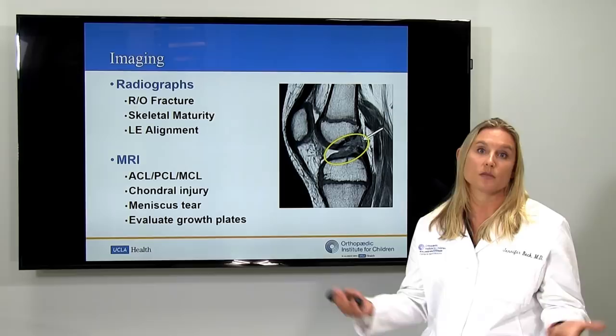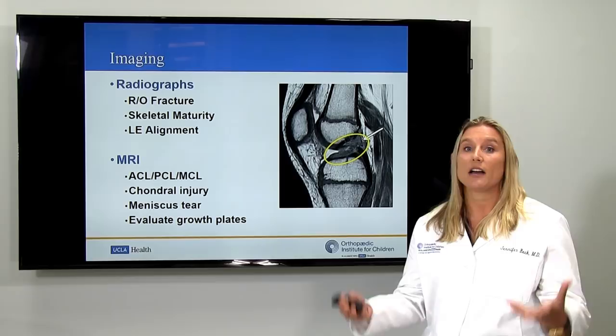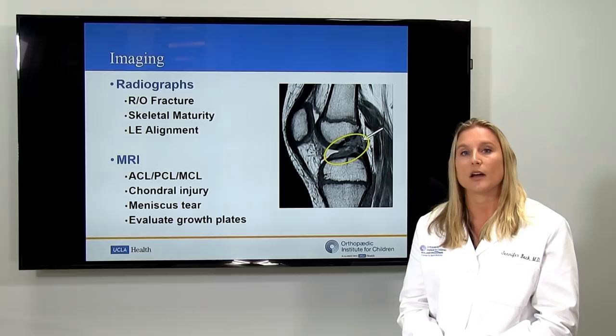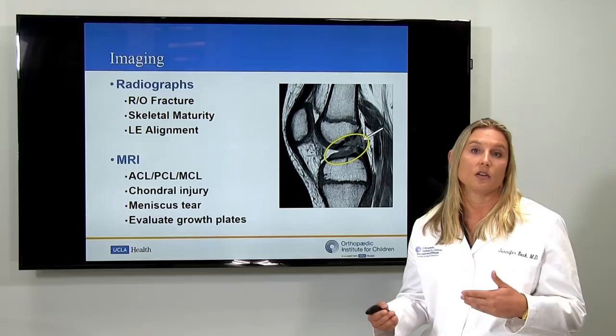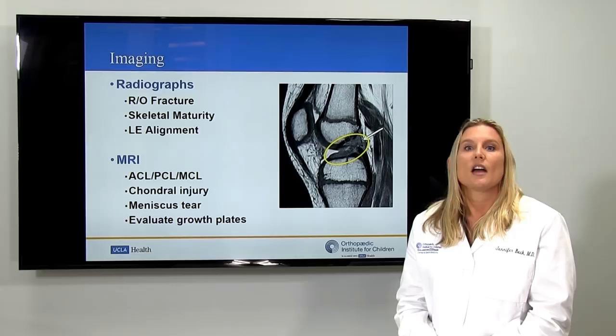If you go into an urgent care or clinic, we'll start with X-rays to check for broken bones, which can also cause a swollen knee. We want to see if your child is done growing — do they still have growth plates? We also look at alignment, how the hips, knees, and ankles line up. X-rays are good at showing bones, but they don't show ligaments, cartilage, or the meniscus.